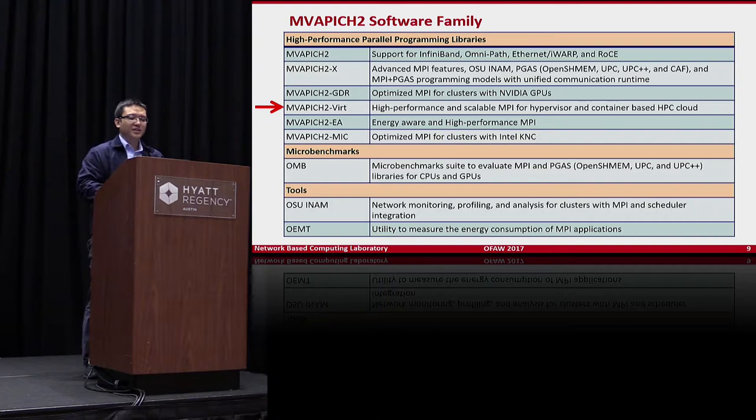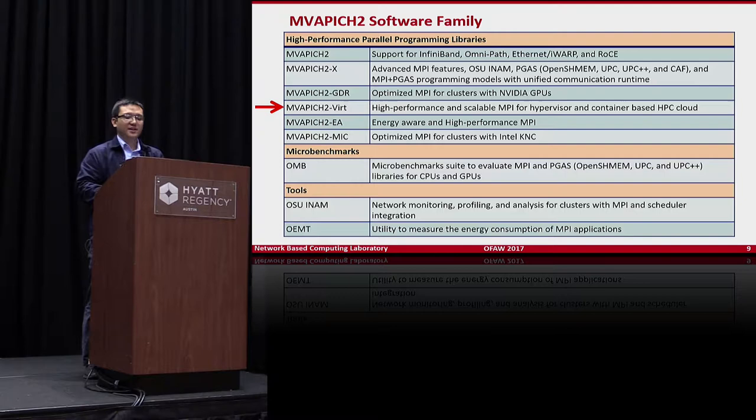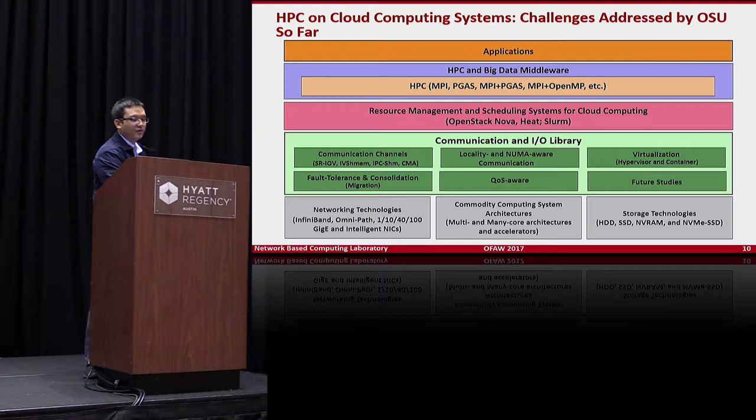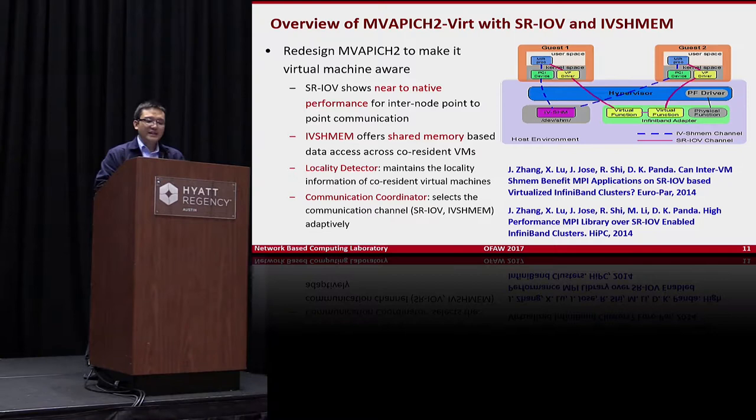In this talk, for the MVAPICH2 software family, we focus on MVAPICH2-Virt — a high-performance and scalable MPI for hypervisor- as well as container-based HPC cloud. The challenges addressed include: what are the best communication channels, locality and new middleware communication, virtualization support for containers and hypervisors, fault-tolerant support including migration, and QoS/hardware studies.